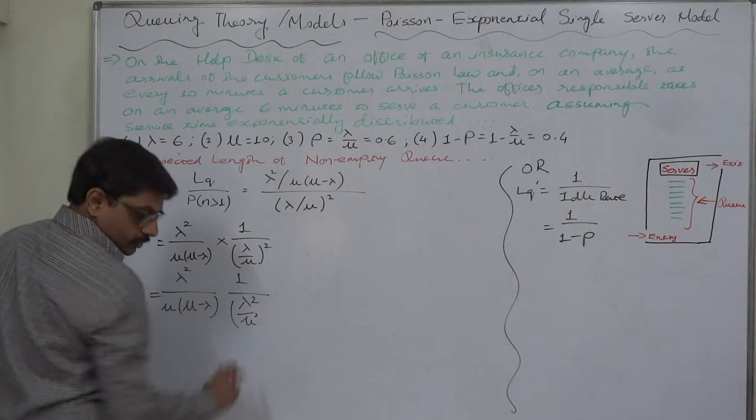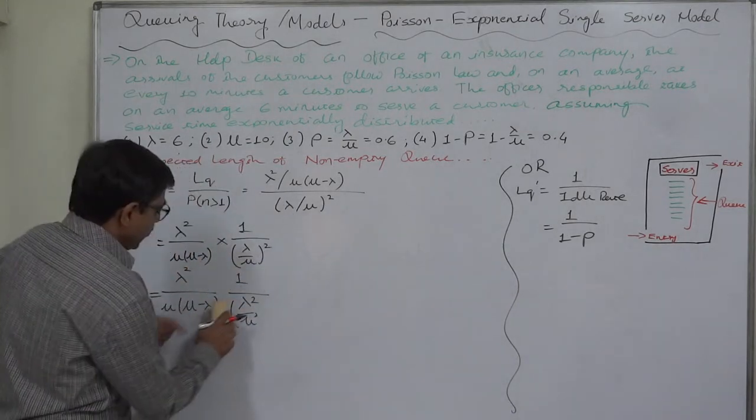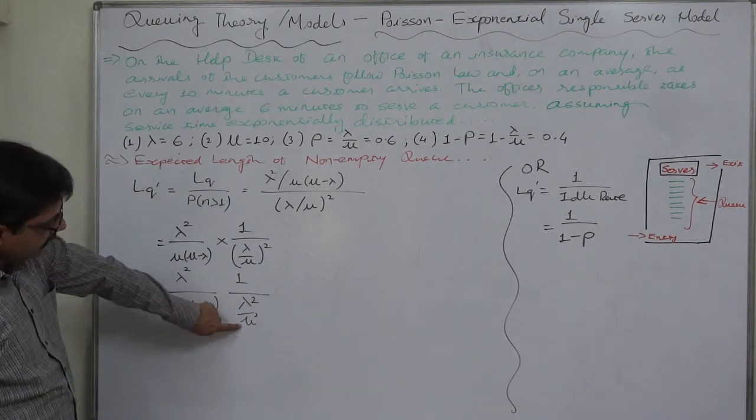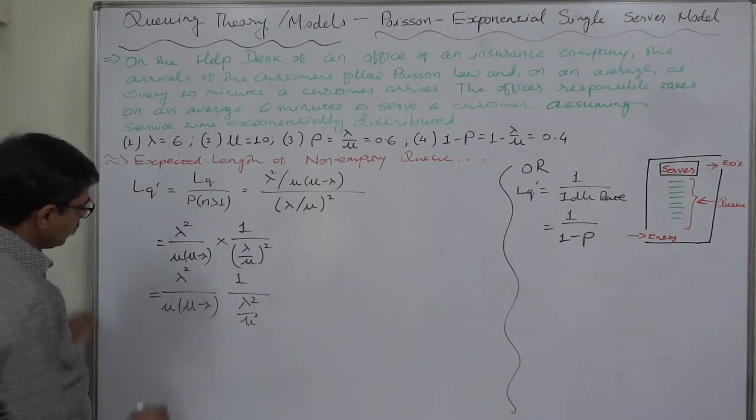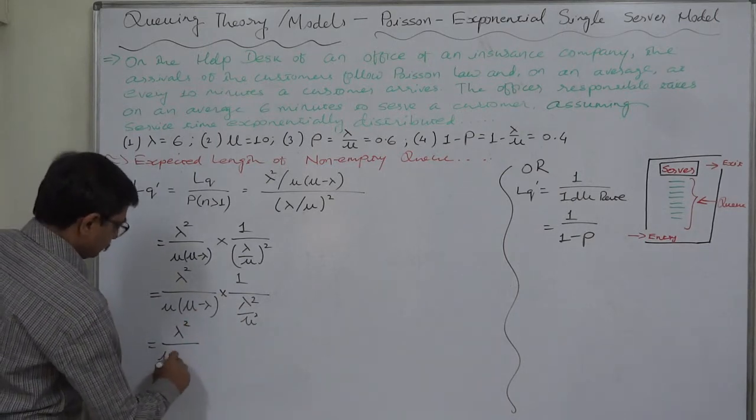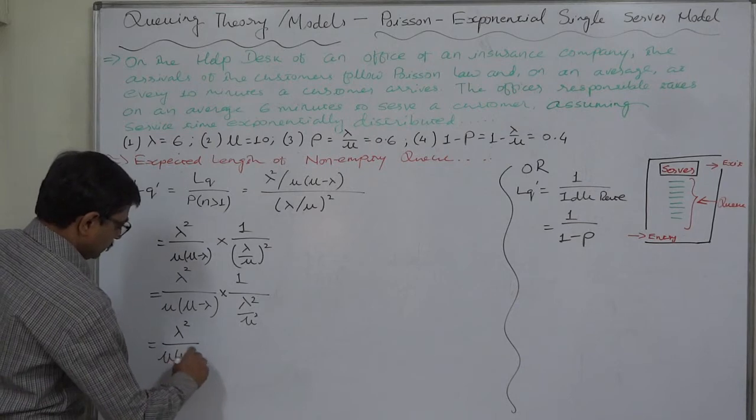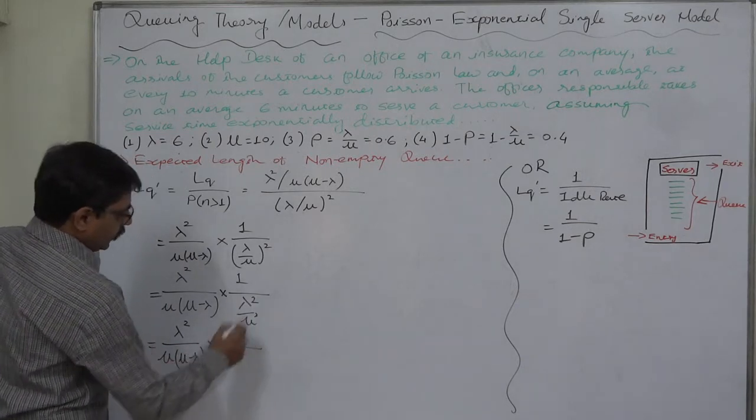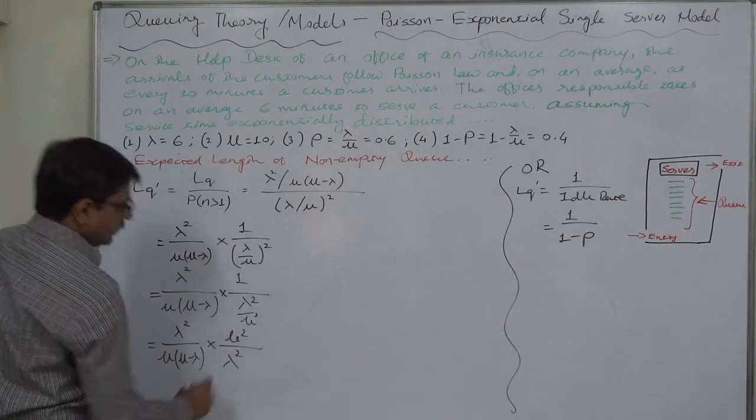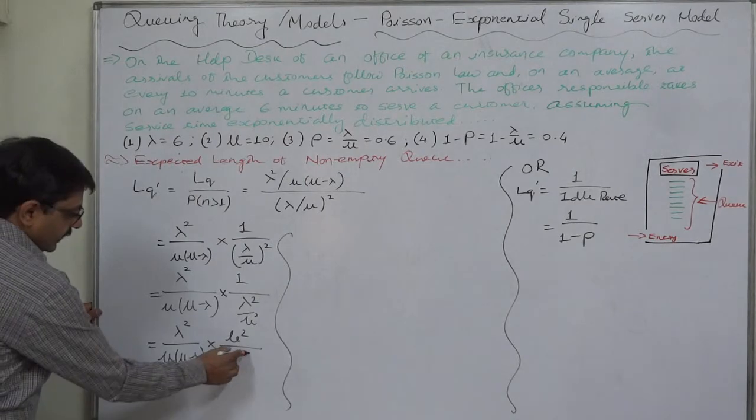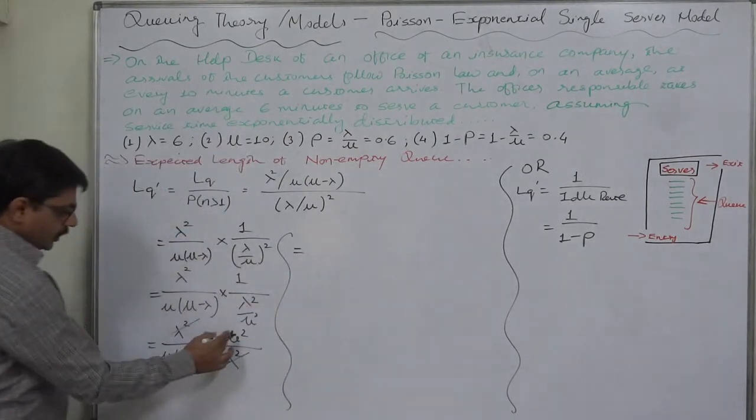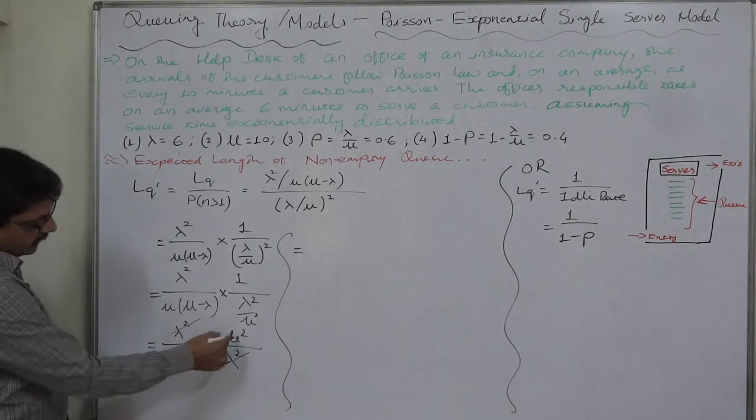Let us remove the bracket so we can decrease the step. Now the denominator of the denominator is multiplied by the numerator, so it will be mu into mu squared into 1, mu squared upon lambda squared. So now we can cancel these two, and the formula becomes mu squared upon mu into mu minus lambda.